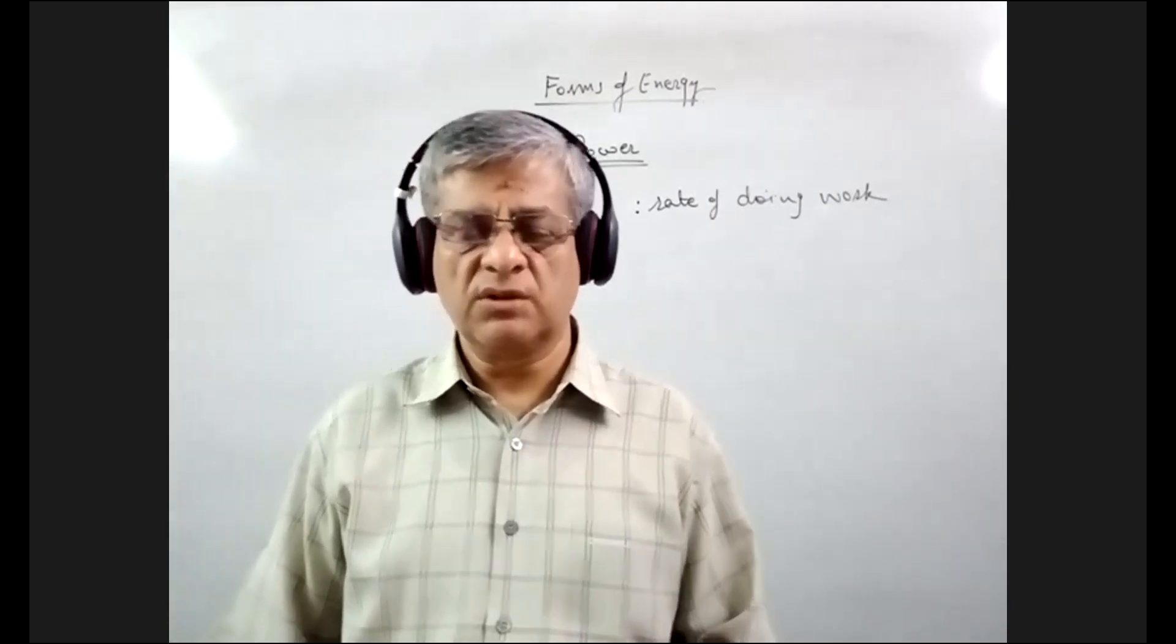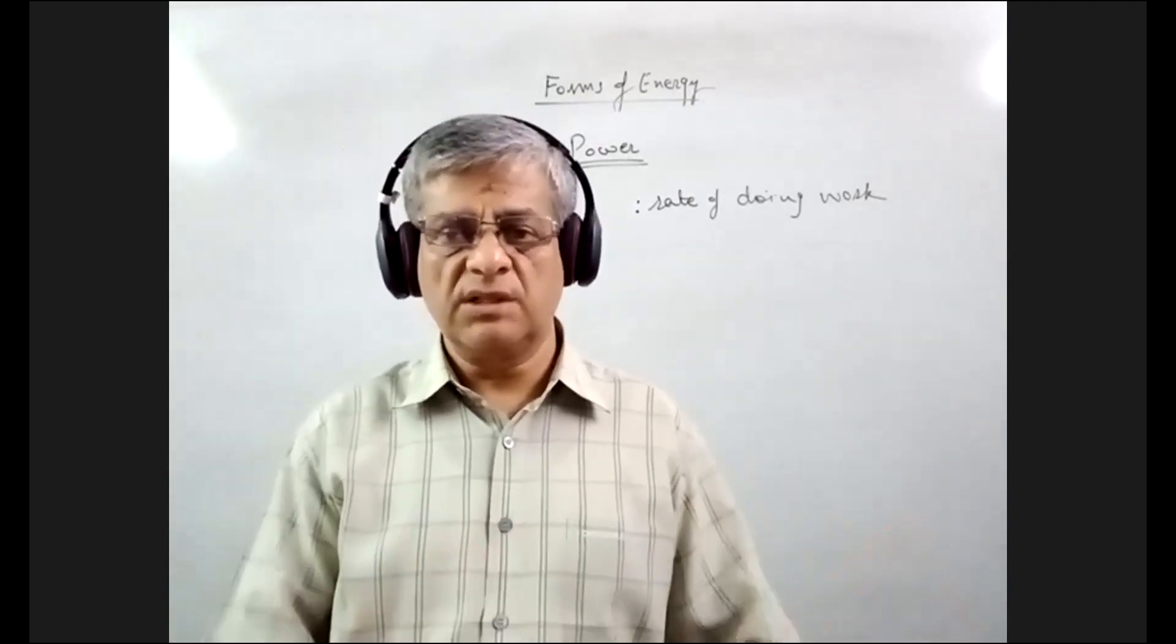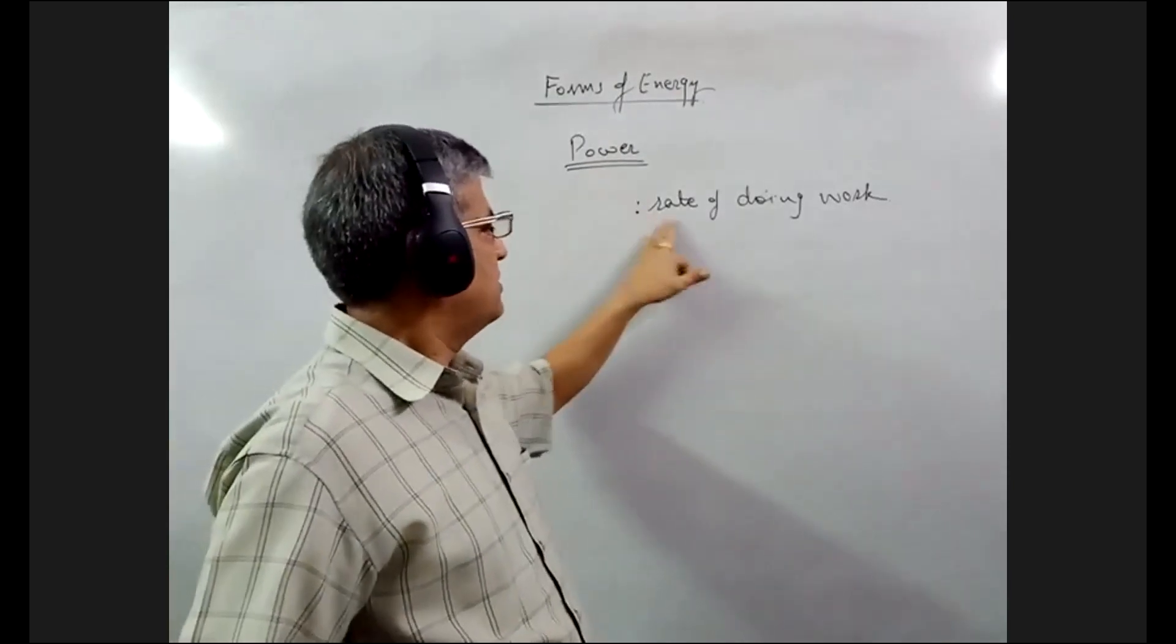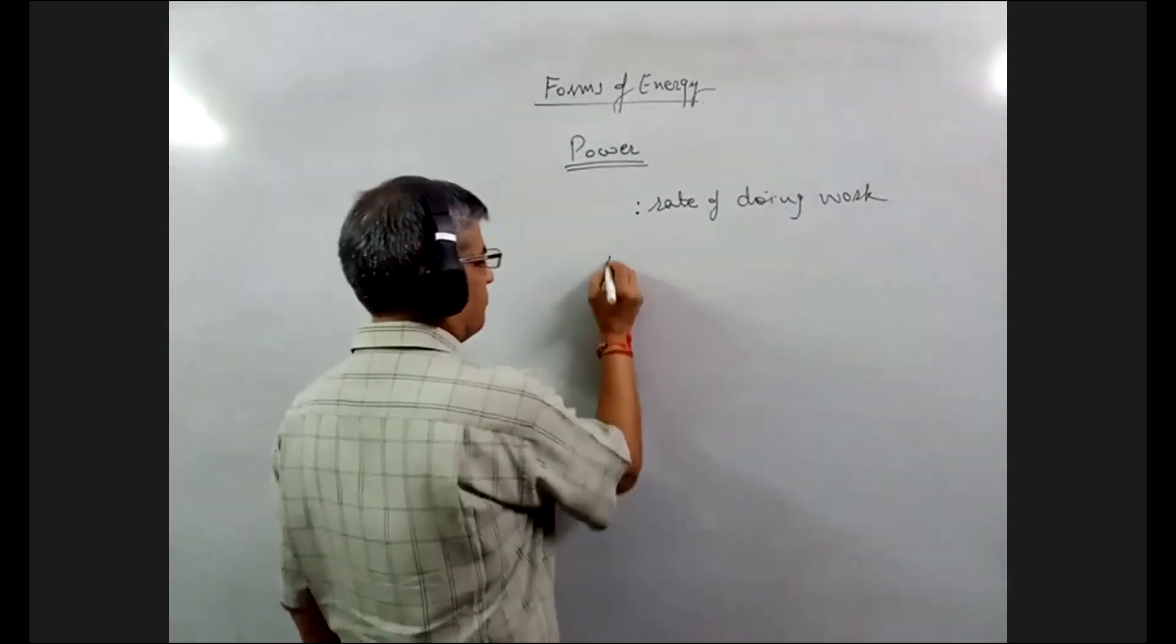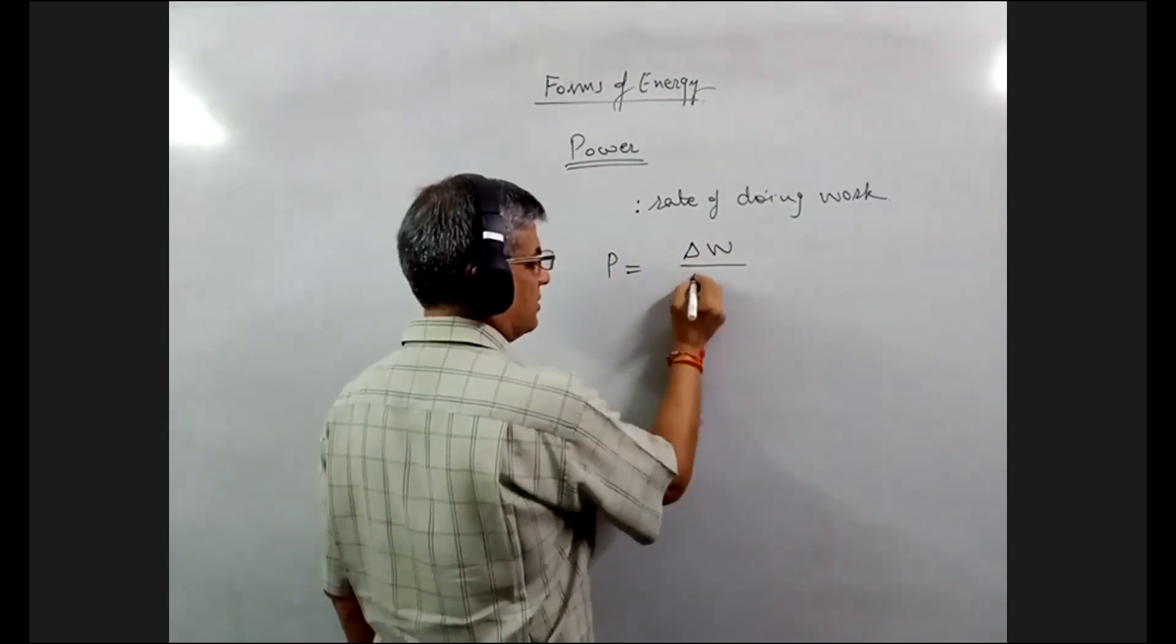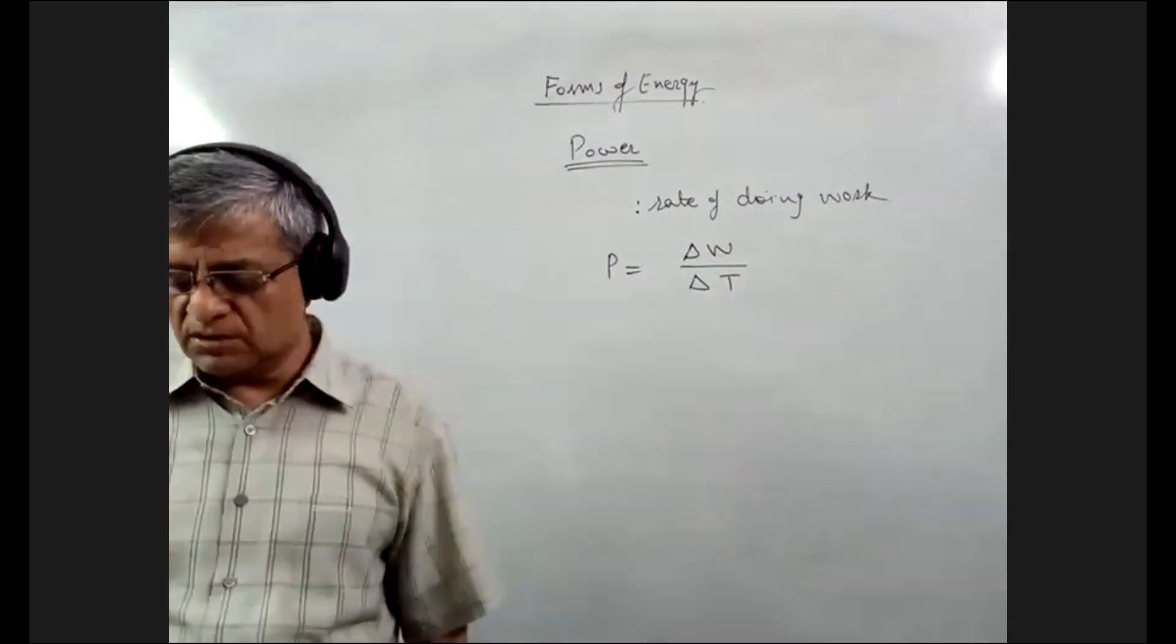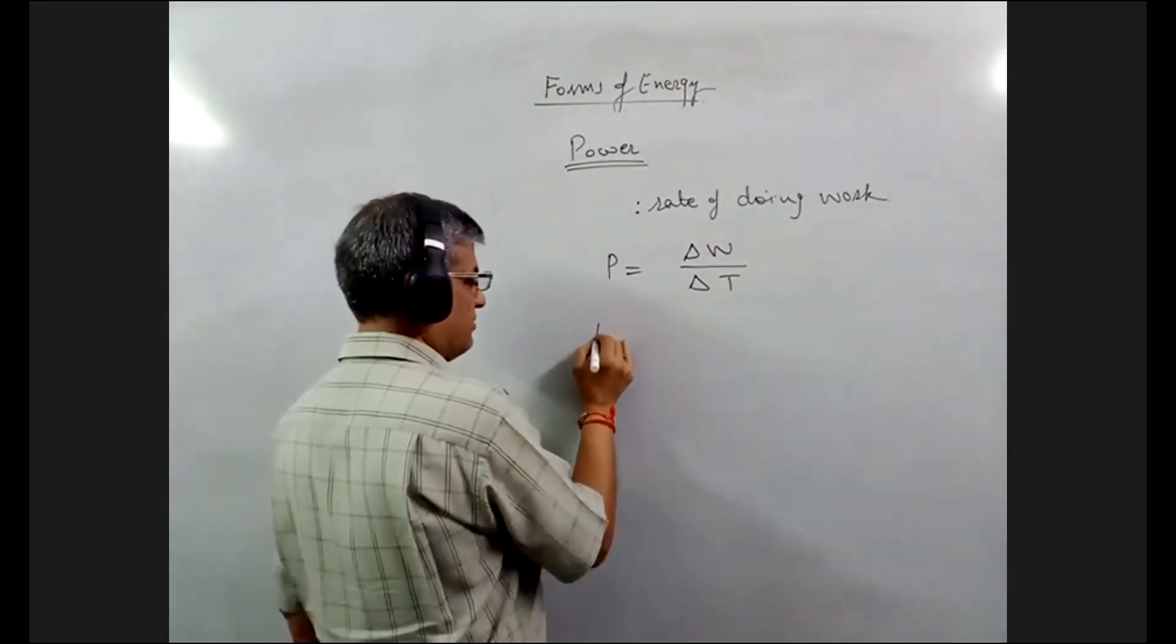So power is rate of doing work. How fast you are doing work or how fast a device or an equipment is doing work. So power is determined by rate of doing work. So power is equal to total work done in total time. This is also called average power.